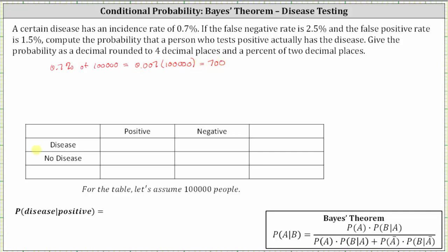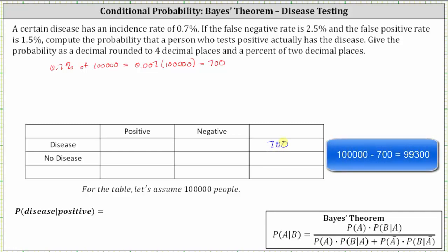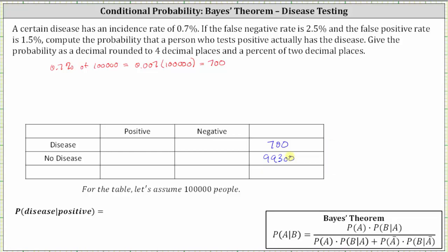So the total for the row that represents those that have the disease is 700, which would be this cell here. That means the number of people that don't have the disease — no disease — would have to be 100,000 minus 700, which is 99,300. This is the total for the number of people that have no disease.